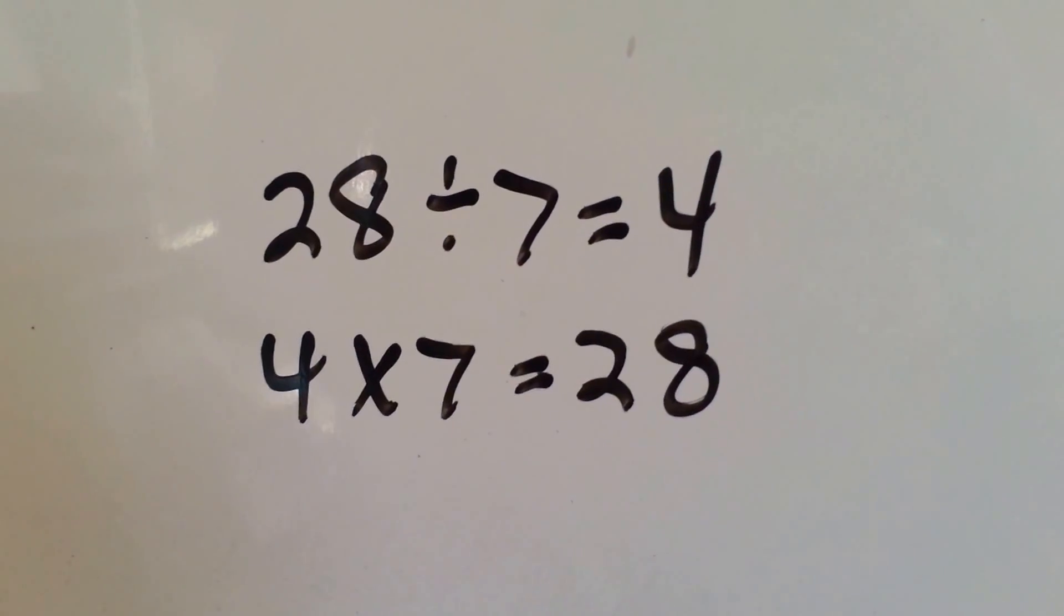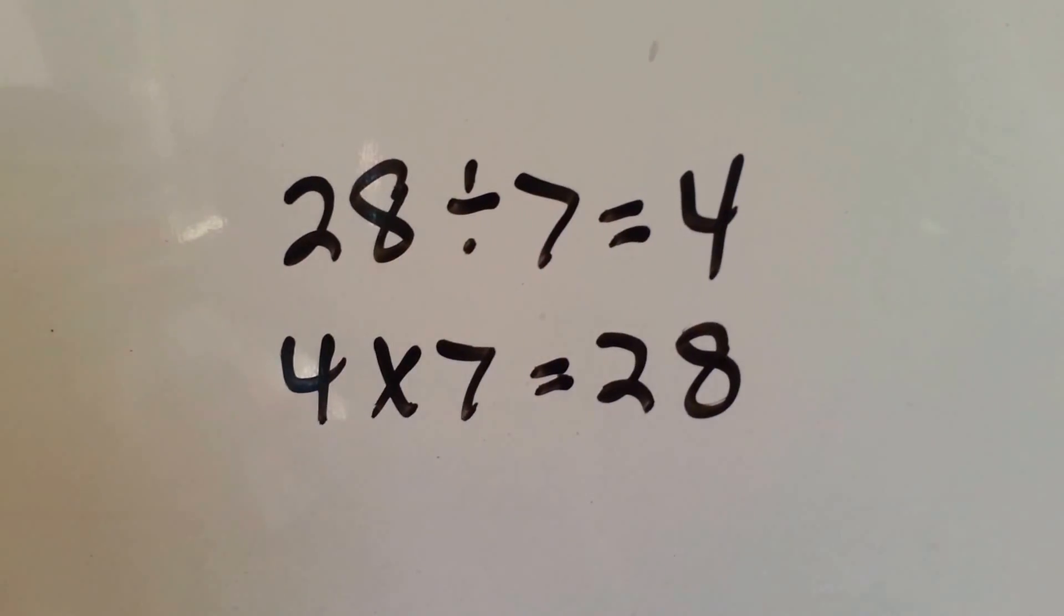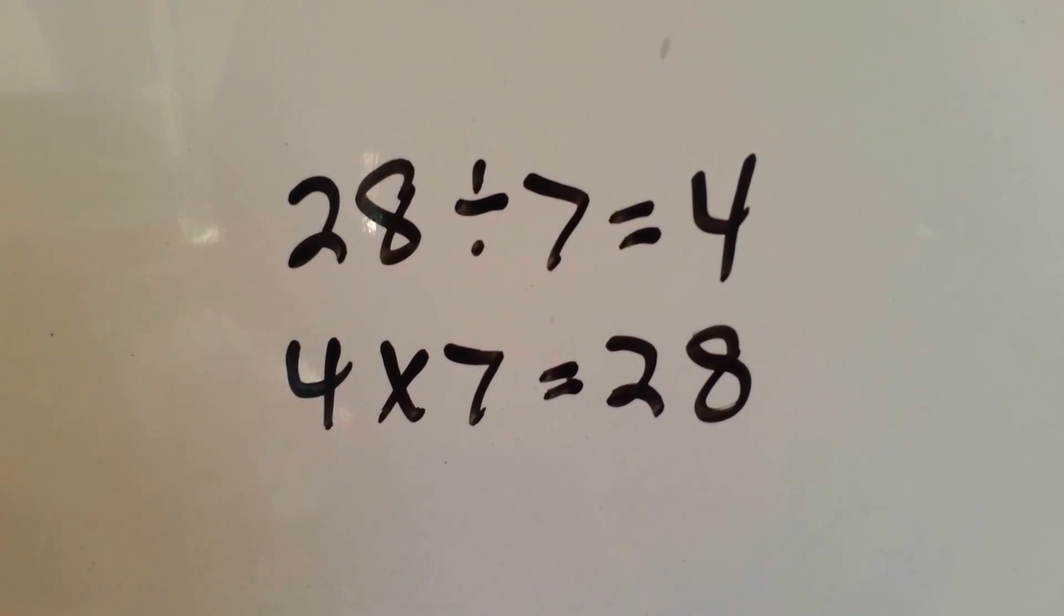One last one. 28 divided by 7 equals 4, and 4 times 7 equals 28.